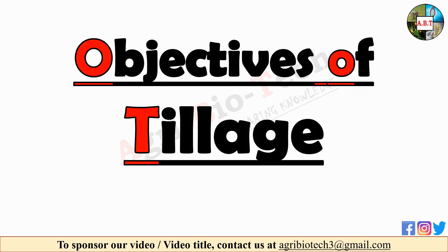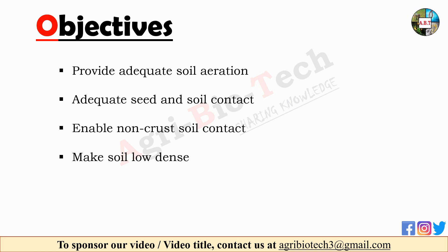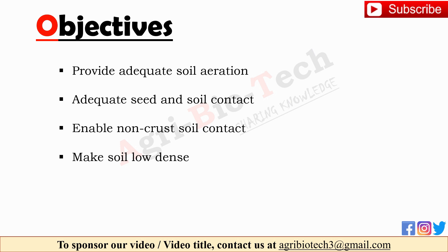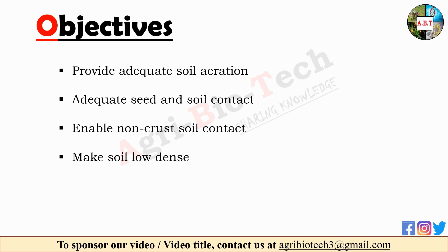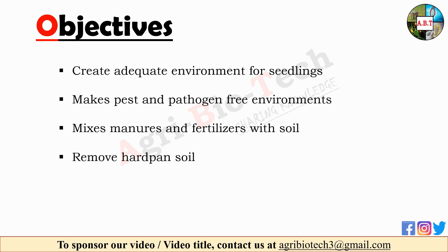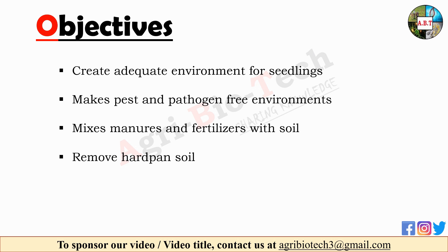Now let's look at the objectives of tillage. First, it provides adequate soil aeration for gaseous exchange in the seed and root zone. It provides adequate seed-to-soil contact to permit water flow to the seed and seedling roots. It also enables non-crust soil contact to permit seedling emergence. Tillage makes the soil less dense, which permits root elongation and proliferation. It creates an adequate environment providing adequate light to the seedling, and makes the environment free of pests and pathogens. It helps in mixing applied manures and fertilizers with the soil, and helps to remove the hardpan to increase soil depth for water absorption.